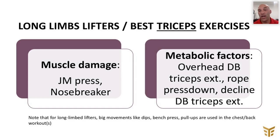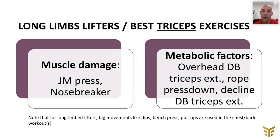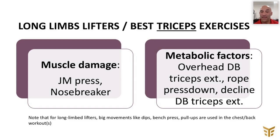For long limb lifters' triceps, for muscle damage I would go with a JM press — a movement where you can load heavy while still focusing on the triceps without letting the chest compensate, which is the issue with long limb lifters. A lot of people think of close grip bench or dips as the best triceps exercises, but they're best for people with short limbs, not long limbs. For long limb lifters, a close grip bench press would mostly be a pectoral exercise. You can also go with a nose breaker, skull crusher, or lying tricep extension. For metabolic factor exercises: overhead dumbbell tricep extension, rope press down, or decline double tricep extension — my personal favorite — where you put the triceps under greater tension for a greater proportion of the range of motion.